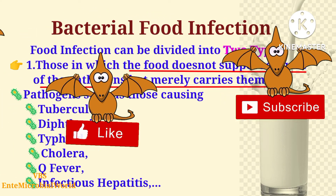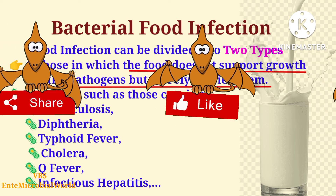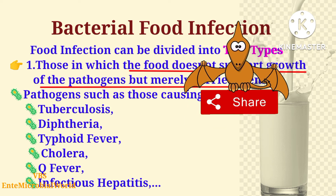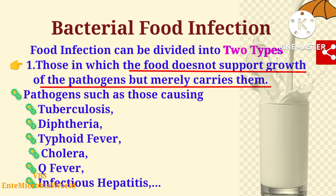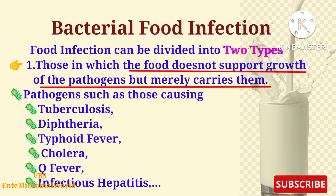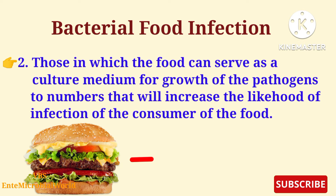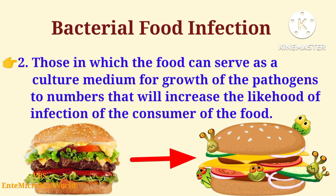The first type includes those in which the food does not support the growth of the pathogens but merely carries them — such as pathogens causing tuberculosis, diphtheria, typhoid fever, cholera, Q fever, and infectious hepatitis. The second type includes those in which the food can serve as a culture medium for growth of the pathogens to numbers that increase the likelihood of infection of the consumer.